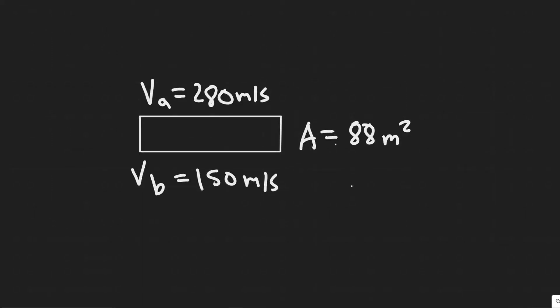In this problem we're told: what is the lift in Newtons due to Bernoulli's principle on a wing of area 88 meters squared if the air passes over the top and bottom surfaces at speeds of 280 meters per second and 150 meters per second respectively?